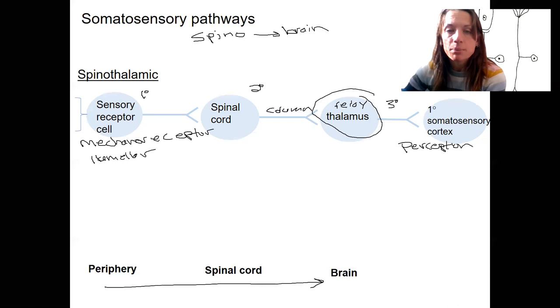This is going to be a pathway for pain. We're going to have nociceptors. Free nerve endings would also be types of sensory receptor cells. These sensory receptor cells could detect pain, temperature, pressure, light touch.